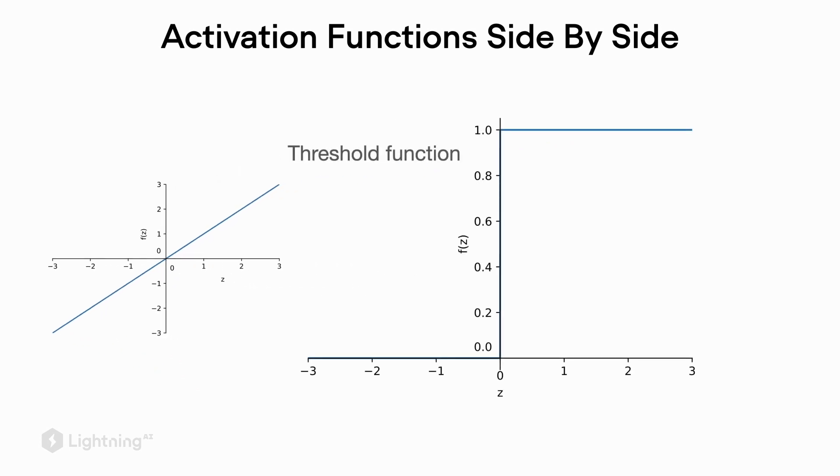For the perceptron, we have this threshold function, which checks whether the net input is greater than zero or not. So if it's greater than zero, it will output one, and if it's not greater or equal to zero, it will output zero.